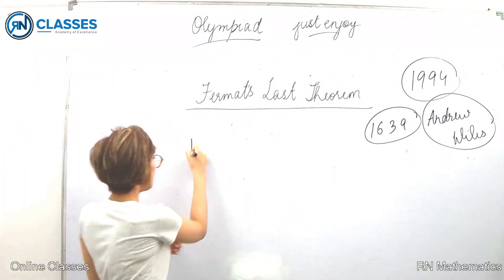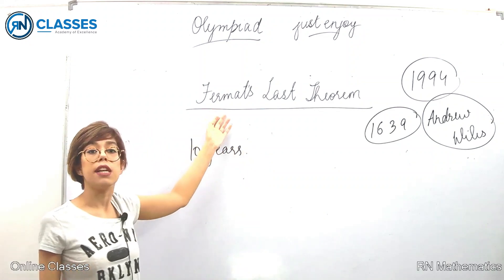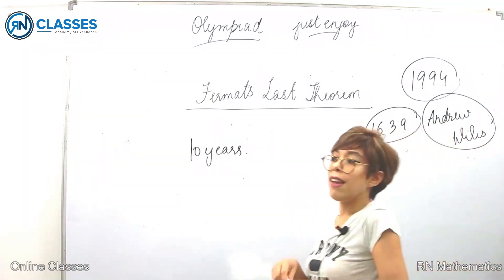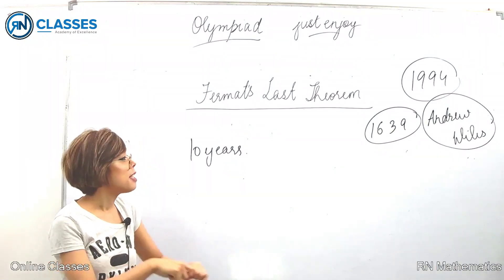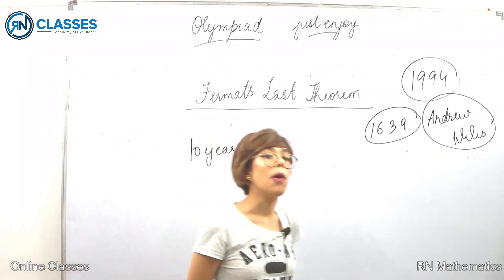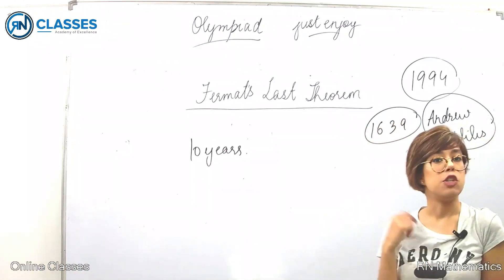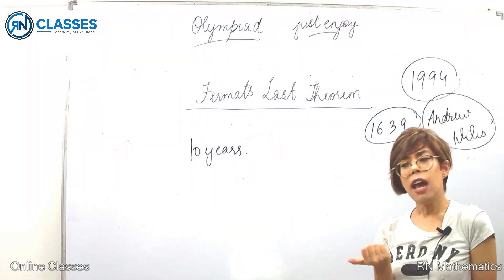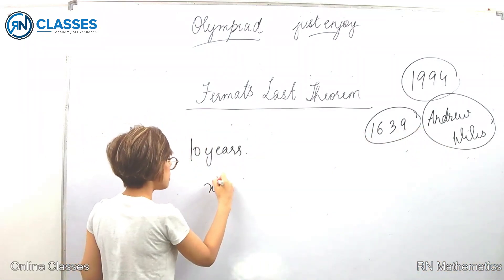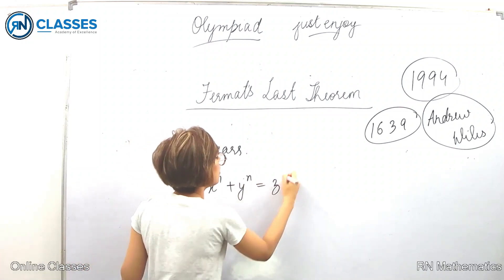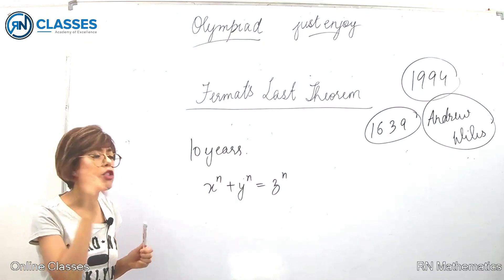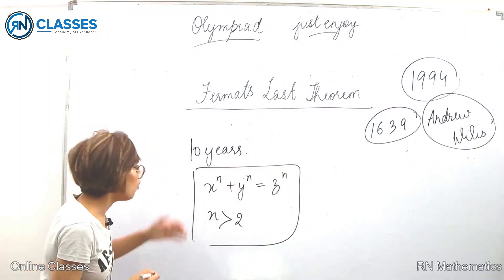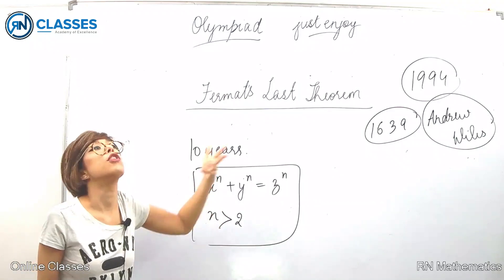Andrew Wiles was 10 years of age when he first encountered this problem. He was in the library and came up with this book called The Last Problem by E.T. Bell. Fermat's Last Theorem was mentioned, and it said this has not been proven till now. Andrew Wiles was like, this statement is so simple. Even a 10-year-old boy can understand what this theorem means.